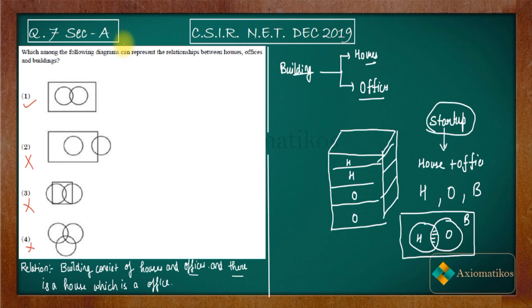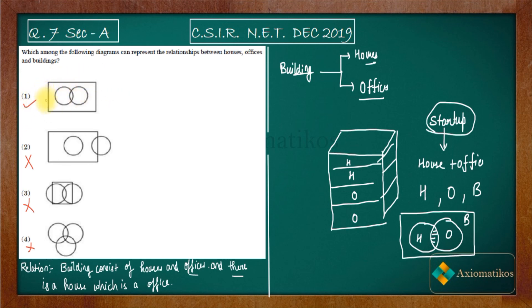There may be different relations you can make to mark one option correct. Once one option is confirmed correct, we don't need to analyze the others, because it is very difficult to show that the other diagrams have no relation between houses, offices, and buildings. It is much easier to show that a valid relation exists for option A.